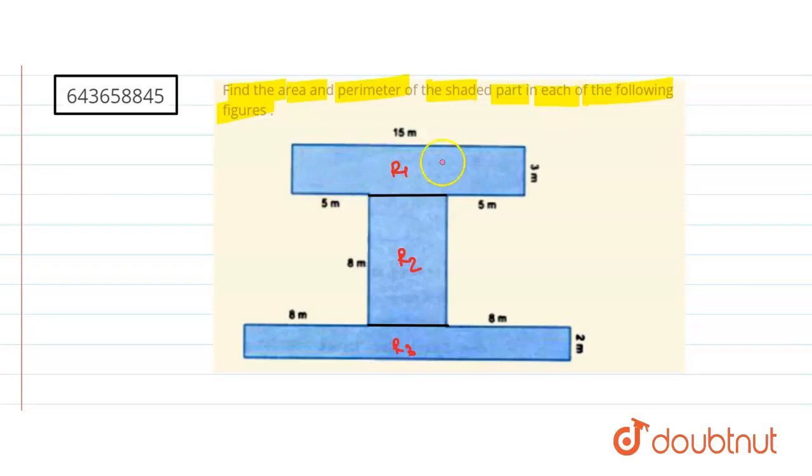Now, what is the area of this region R1? So the length is 15 and width is 3. Therefore, area of region R1 is nothing but 15 into 3, this is equal to 45 meter square.